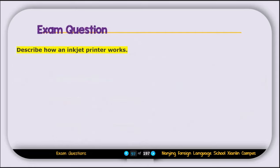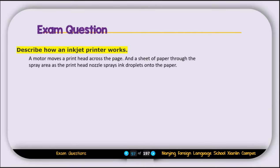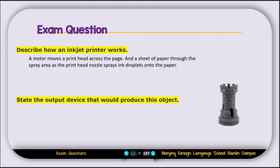Now let's look at exam questions. The first question asks you to describe how an inkjet printer works — you can pause the video to read the answer. The second question asks you to identify the output device that would produce a specific object shown on screen. The answer is a 3D printer.